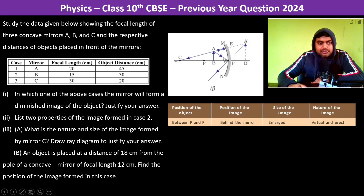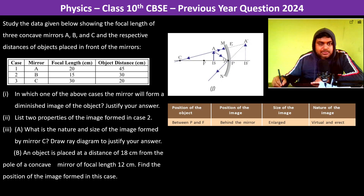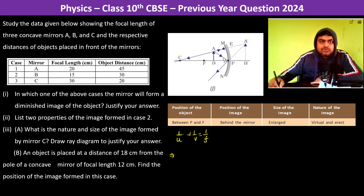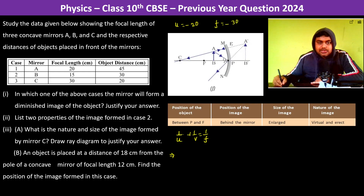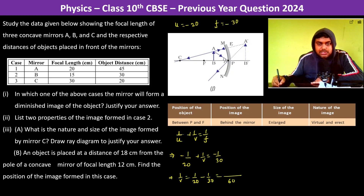We can also justify this using the equation. With u = -20 cm and f = -30 cm: 1/(-20) + 1/v = -1/30. So 1/v = 1/20 - 1/30 = (3 - 2)/60 = 1/60. Therefore v = +60 cm.